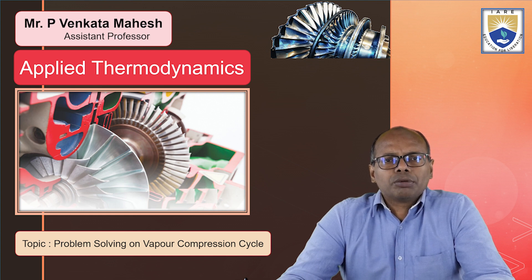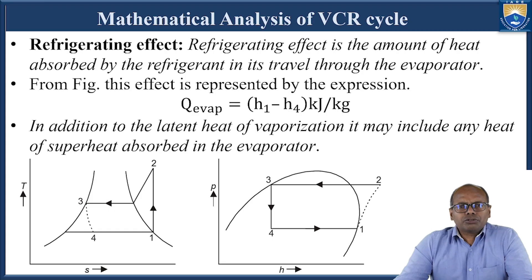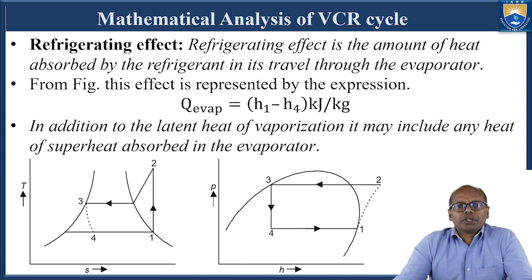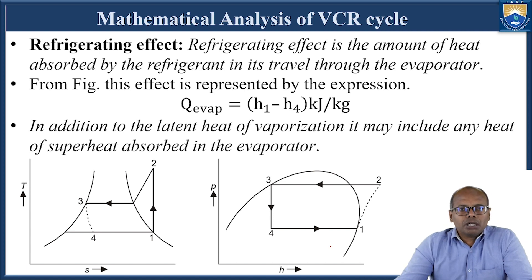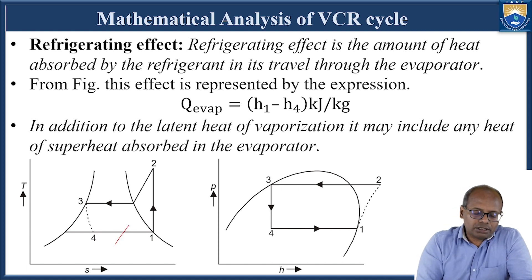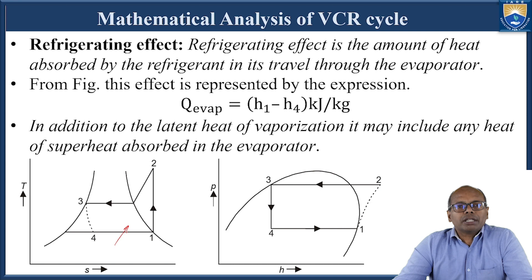We will see some problems involved in analyzing this cycle. First, we will see what aspects are generally covered in the analysis. The first one is the refrigeration effect. Looking at the T-S diagram and P-S diagram, this is the evaporation process wherein the refrigeration effect is produced.